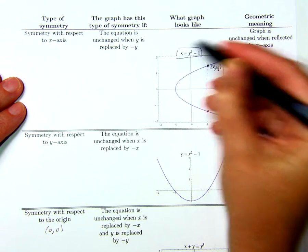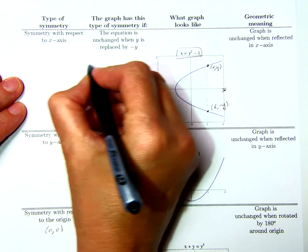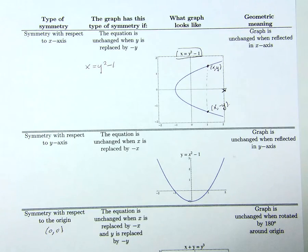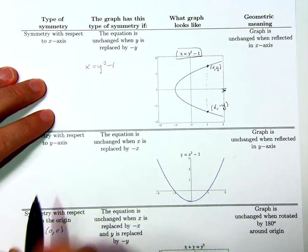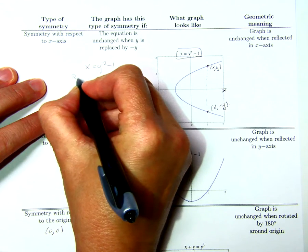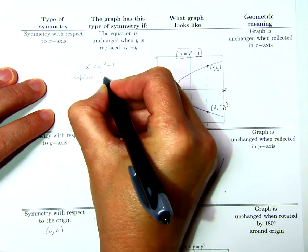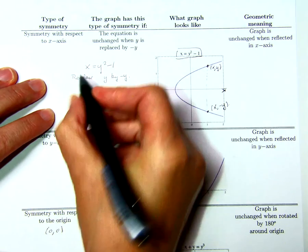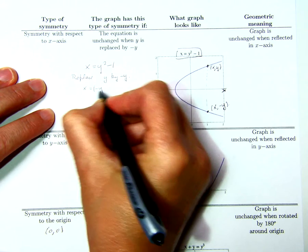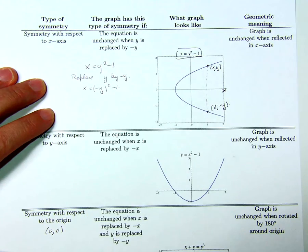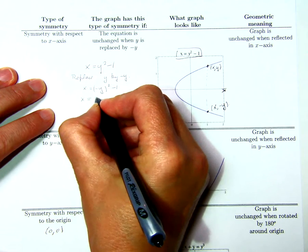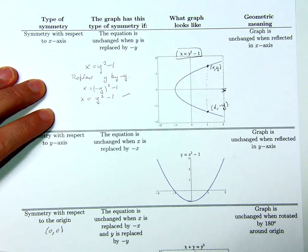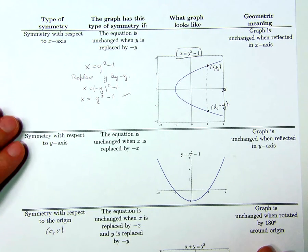Let's look at this equation: x = y² - 1. We can see from its graph that it should be symmetric with respect to the x-axis. Let's run the test on it. We replace y by negative y in the equation, and we get x = (-y)² - 1, which is exactly the same equation because (-y)² = y². So we definitely have symmetry with respect to the x-axis here.